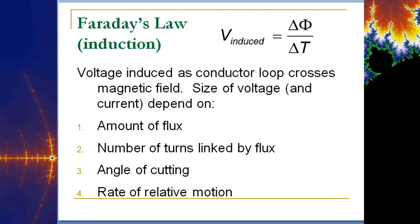This brings us to Faraday's law. Essentially, it says the voltage is induced as a conductor loop crosses a magnetic field. The size of voltage and current depend on the amount of flux, the number of turns linked by the flux, the angle of cutting, and the rate of relative motion. You get an induced voltage on the coil.